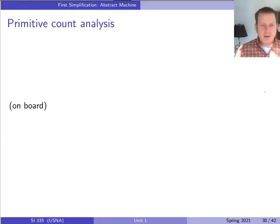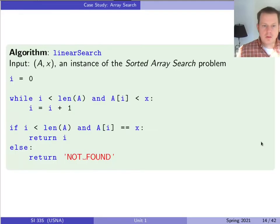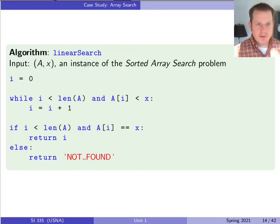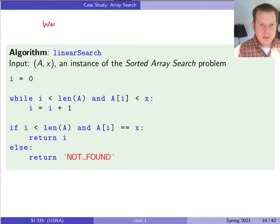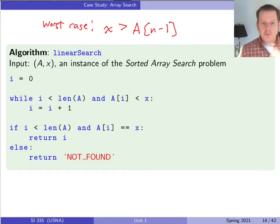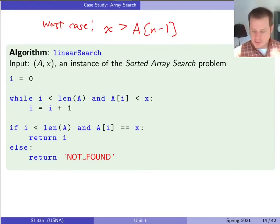To give an idea of this, let's do a specific primitive count analysis for linear search. Here's the linear search algorithm and we want to formally count the number of primitive operations for a size-n array in the worst case. The worst case is that we go through the loop the maximum number of times — that is, the thing we're searching for is greater than the largest thing in the array, so we go through the entire array and finally return not found at the end. Let's think about how many steps that takes.